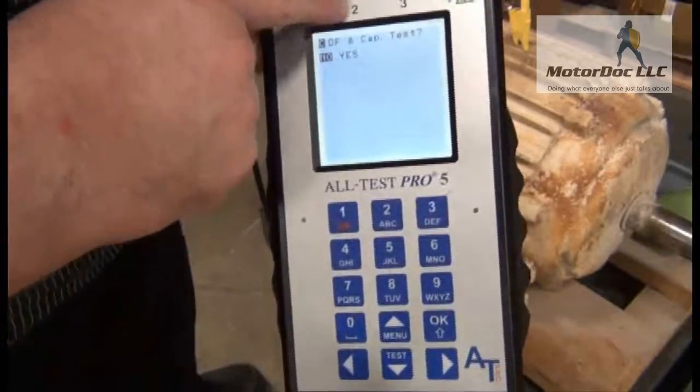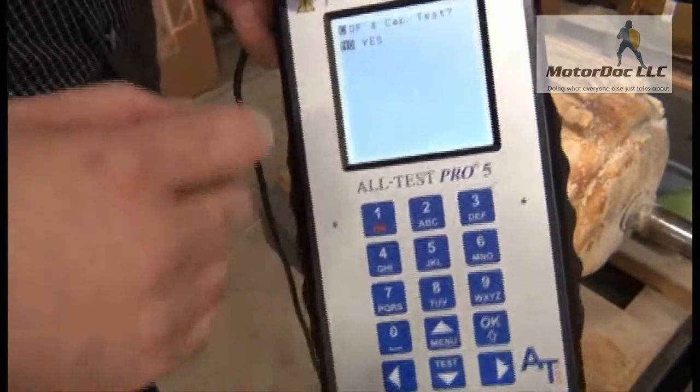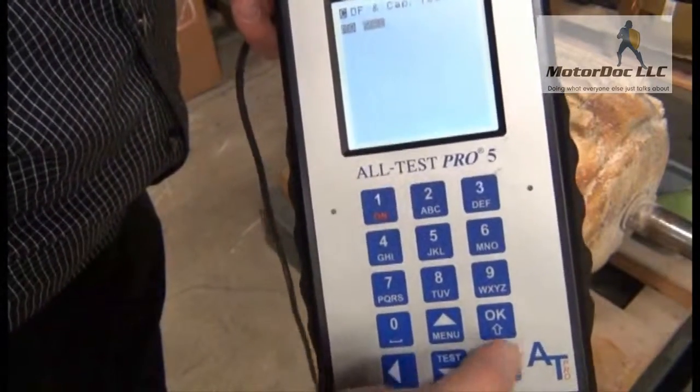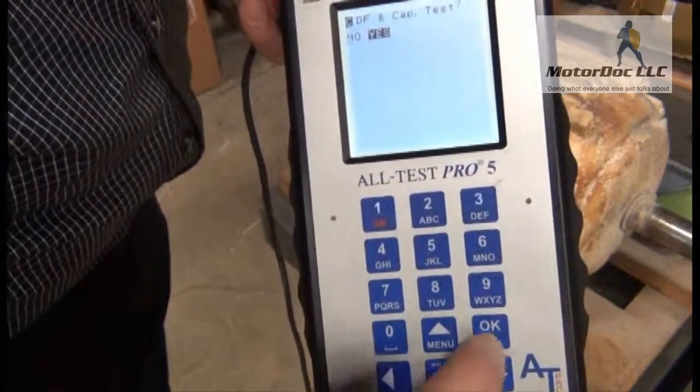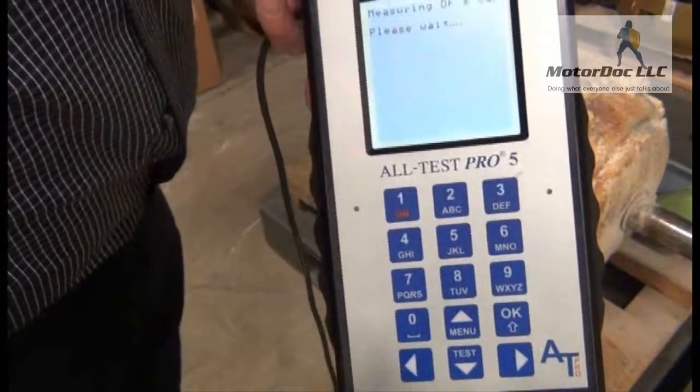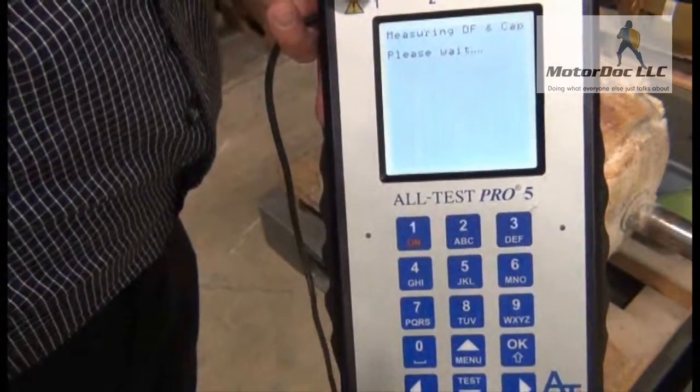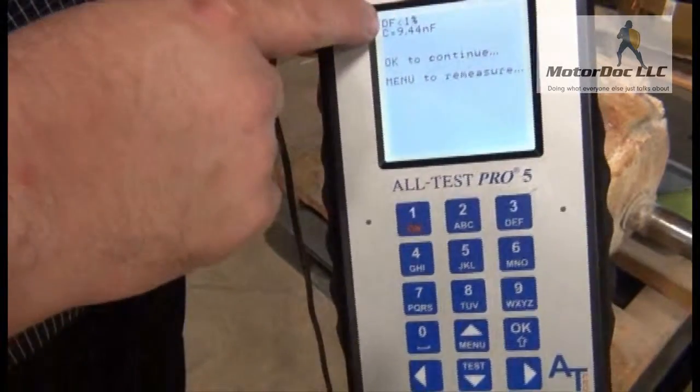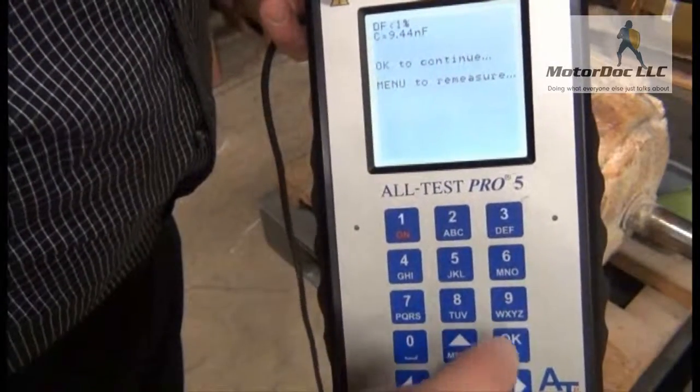So the next step then is to press OK. It asks if I want to do dissipation factor or capacitance test, and I will have covered those under a different video. So yes, I do want to do that. So I press OK. And I let it run the test for me. It gives me dissipation factor and capacitance.